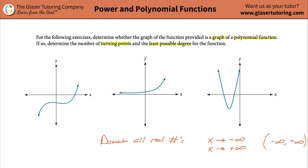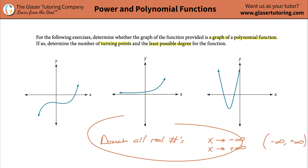Same thing here with this one - this goes on and on and on forever in the negative x direction, and same thing here goes on and on forever like that, and it does move to the positive x side. So all these meet the first condition: domain must be all real numbers.